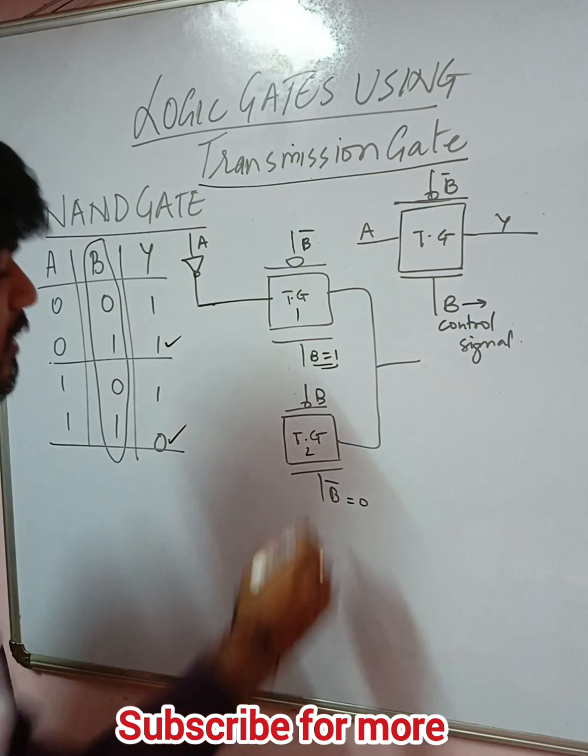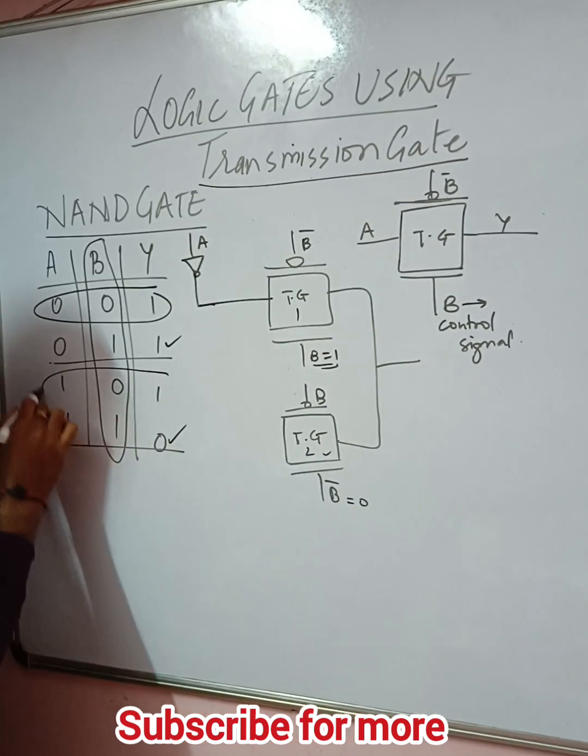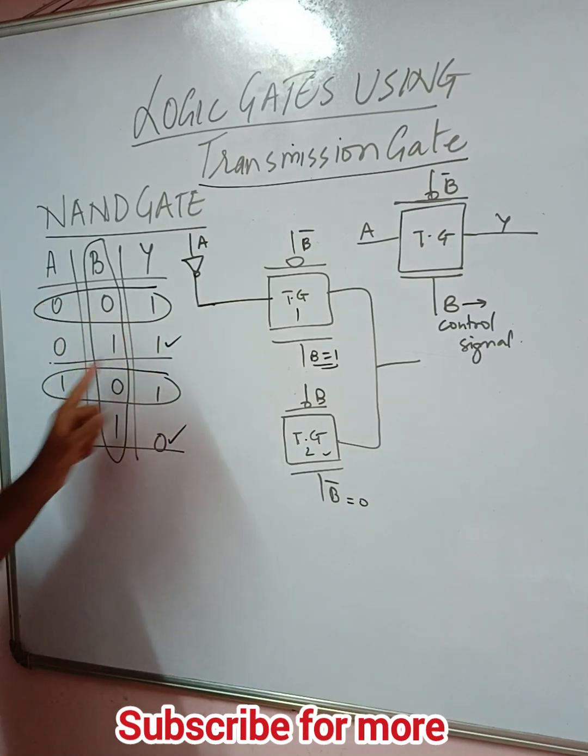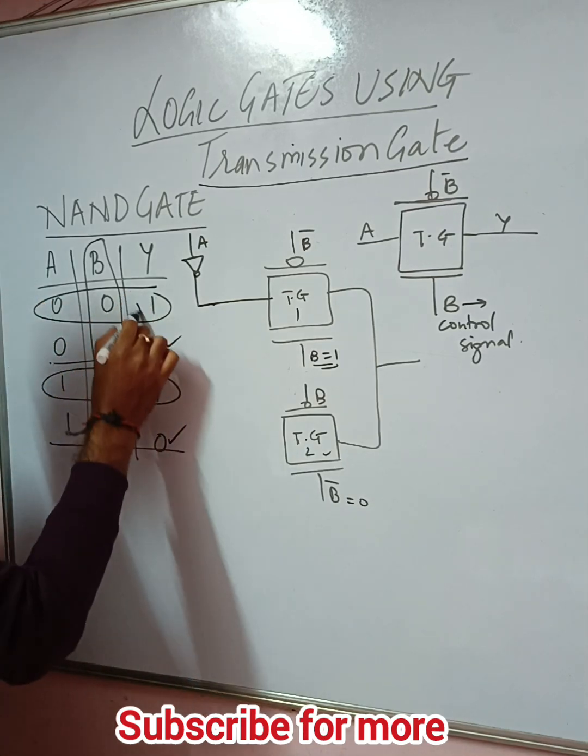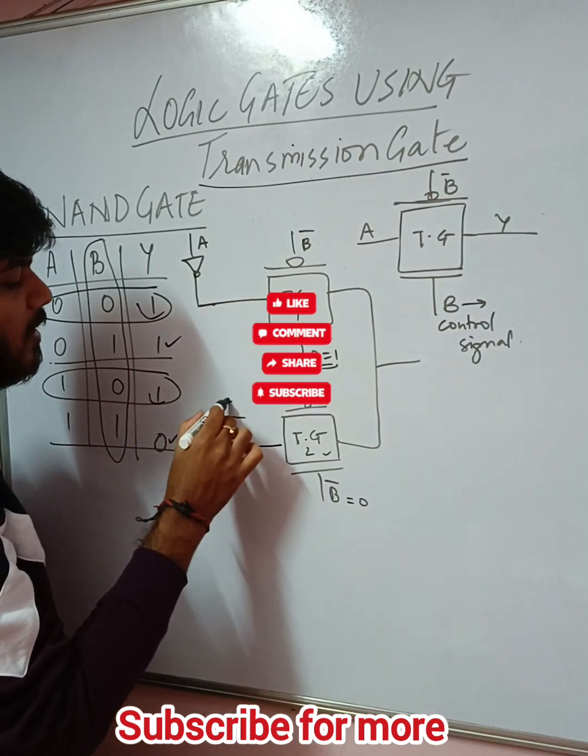When B equals 0, this transmission gate will be activated, and these are the other two combinations remaining. When B equals 0, irrespective of A value, your output is going to high. So we will directly connect this to plus 5 volts.